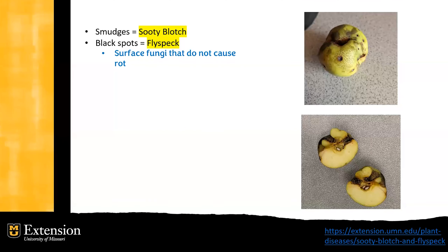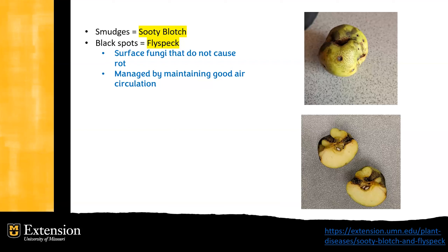You can scrub them off to make them look a little bit better, and they're perfectly fine to eat — it's just a cosmetic issue. Since it is a fungus, it can be controlled just by maintaining good air circulation. Pruning your tree properly and letting the canopy be open enough that air can flow through is a good way to manage that without using any sprays or herbicides. The fruit is perfectly edible.